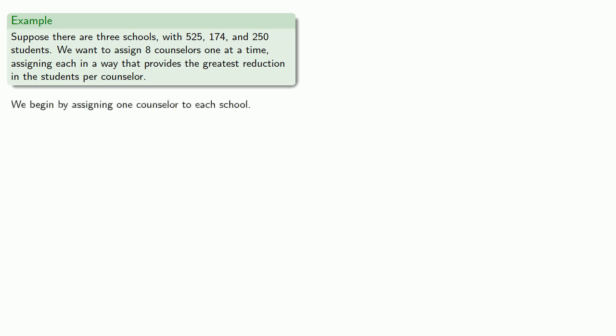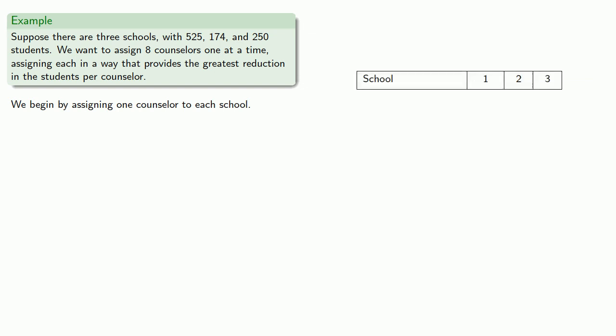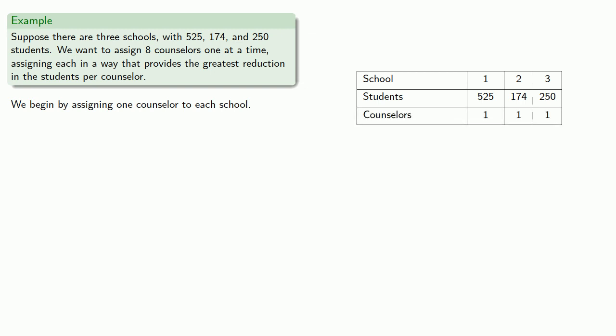We begin by assigning one counselor to each school, and now we compute the students per counselor for each school and how much this would be reduced if assigned one more. So we have our schools, we have our students, we have our initial assignment of one counselor, and we compute the students per counselor.